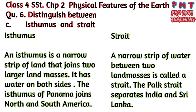Distinguish between isthmus and strait. An isthmus is a narrow strip of land that joins two larger land masses and has water on both sides — for example, the Isthmus of Panama joins North and South America. A strait is a narrow strip of water between two land masses — for example, the Palk Strait separates India and Sri Lanka.